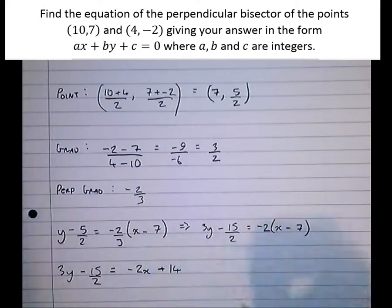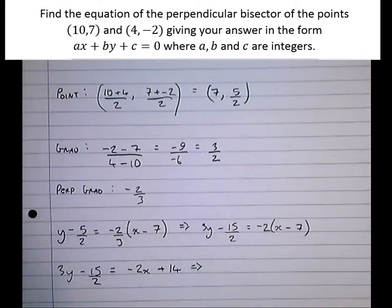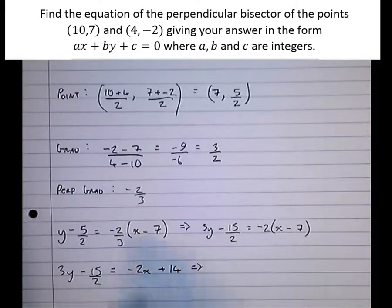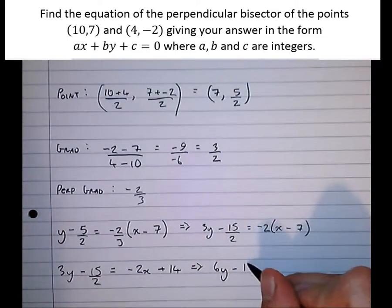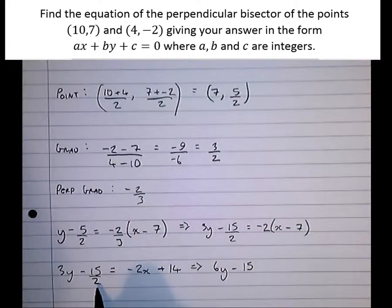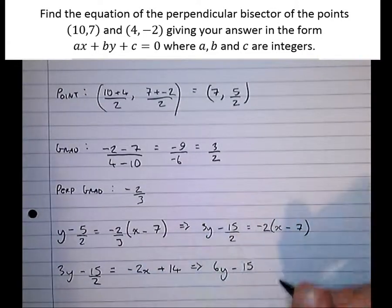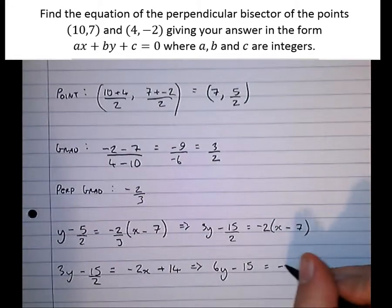And we need all the coefficients to be integers. That's what the question requires: ax plus by plus c, where a, b, and c are integers. So let's times everything by 2 now. That gives us 6y minus 15, times that by 2 undoes the divide by 2, equals minus 4x plus 28.